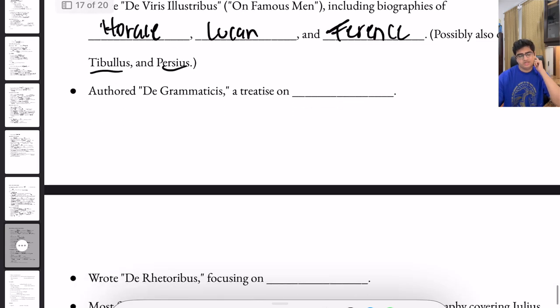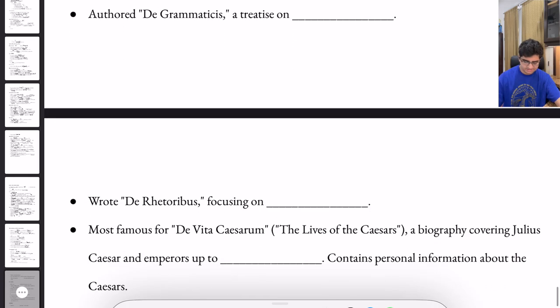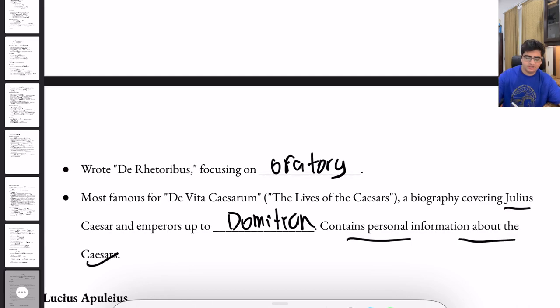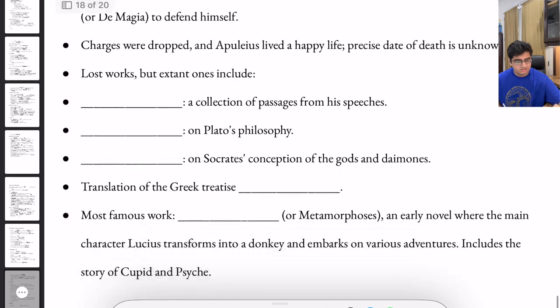He authored De Grammaticis, a treatise on grammar. He wrote De Ratoribus, which focused on oratory. The most famous was his De Vita Caesarum, a biography covering Julius Caesar and emperors up to Domitian. It contains personal information about the Caesars as well.